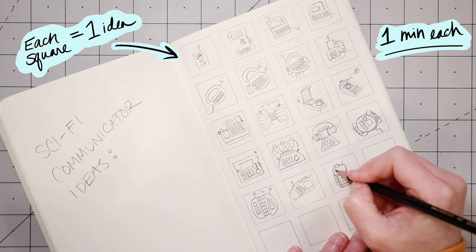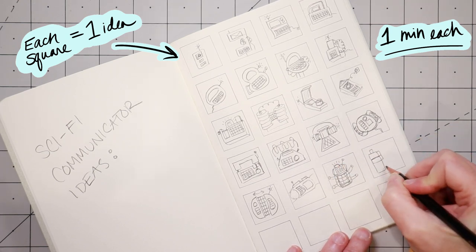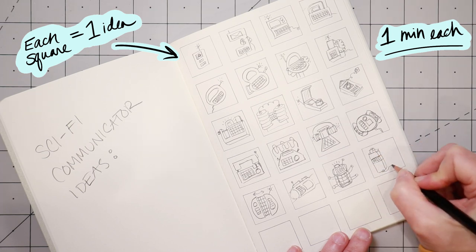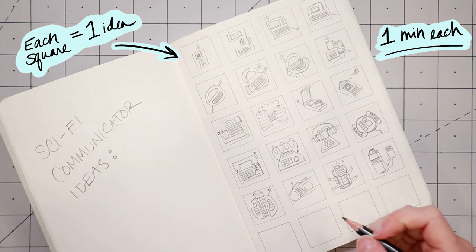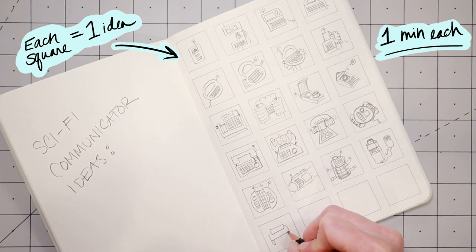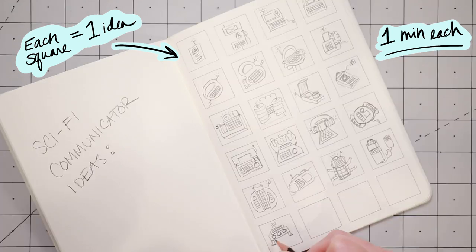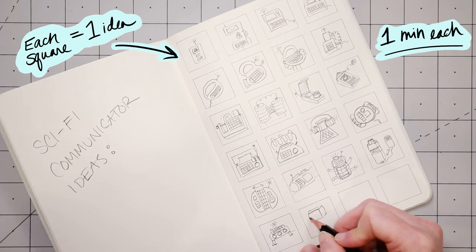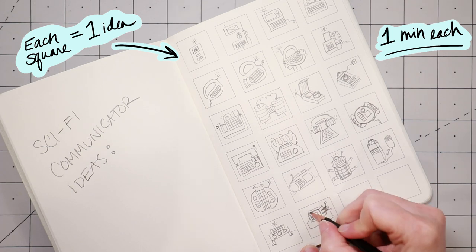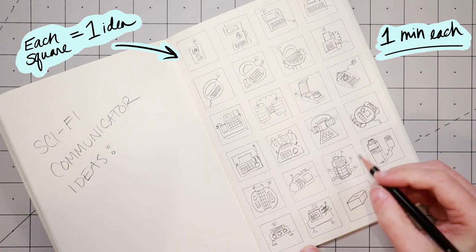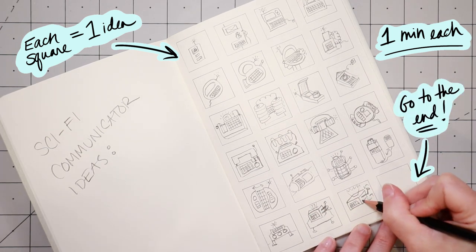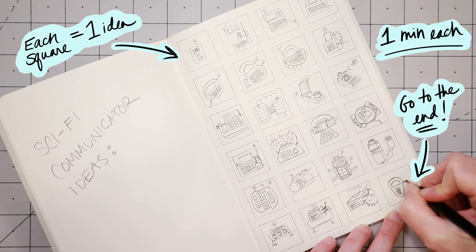I generally find that my first row of thumbnails are pretty obvious, and my ideas get more interesting in the middle of the page, where I've forced myself to think of something else. By the last row, my brain is pretty tired, and I may have exhausted my concept, but don't skip the last row. It's important to go all the way to the end with this technique.